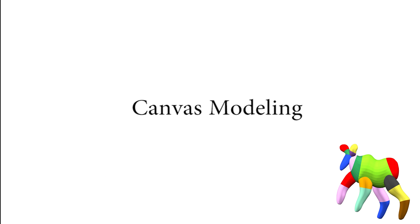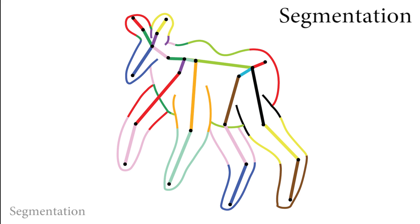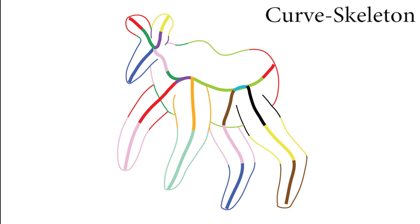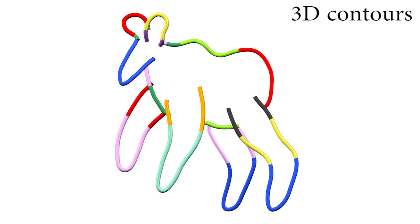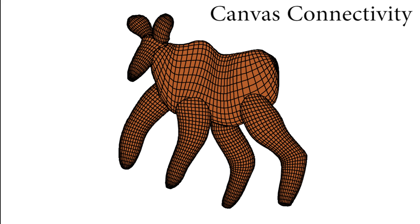We use a three-step process to model the character canvas. We first compute a 3D curved skeleton which is close to the artist-defined straight line one, but well-centered with respect to the drawn contours. We construct a quad-dominant mesh to represent the canvas.